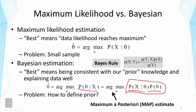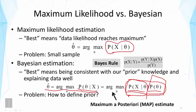We can maximize this posterior probability to find a theta that would maximize it. This estimator is called the Maximum A Posteriori, or MAP estimate. MAP is a more general estimator than the maximum likelihood estimator, because if we define our prior as a non-informative prior — uniform over all theta values with no preference — we go back to the maximum likelihood estimator, since the result is mainly determined by the likelihood.